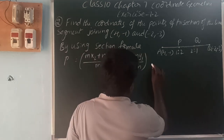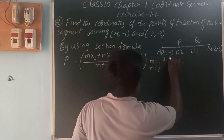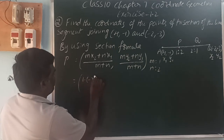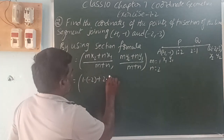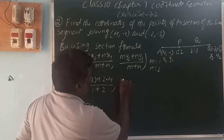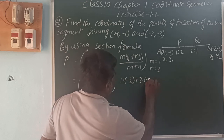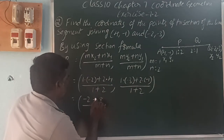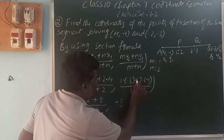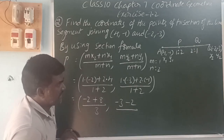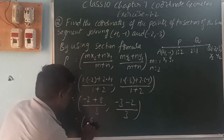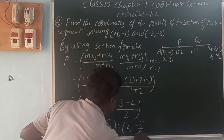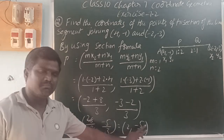At point P, the ratio m is to n is 1 is to 2, so m is 1 and n is 2. Substituting: 1 into x2 which is minus 2, plus 2 into x1 which is 4, by 1 plus 2 which is 3. Next, 1 into y2 which is minus 3, plus 2 into y1 which is minus 1, by 3. That gives minus 2 plus 8 which is 6, by 3. And minus 3 minus 2 which is minus 5, by 3. So the point P is 2 comma minus 5 by 3.